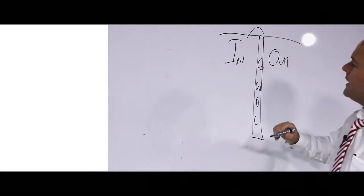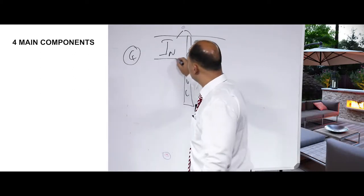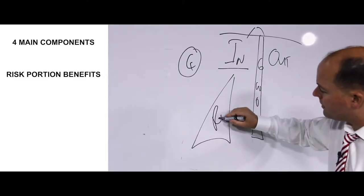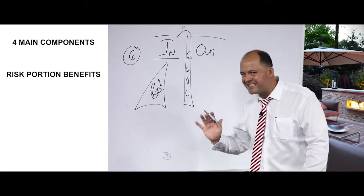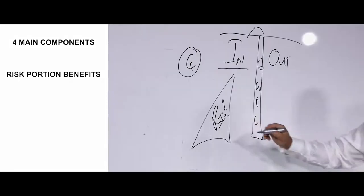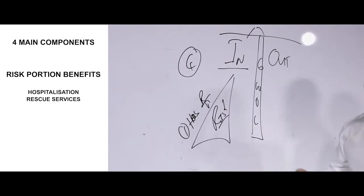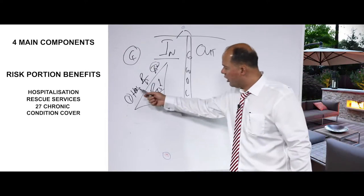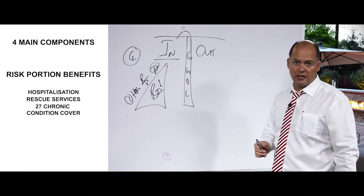All medical aids have four main components. Three of the four components are situated on the in-hospital side, also better known as risk portion benefits — because that's what's going to cost serious money when things go wrong. The risk portion side consists of: one, hospitalization; two, rescue services; and three, 27 chronic conditions as laid down by law.